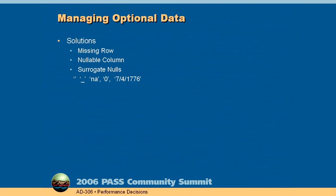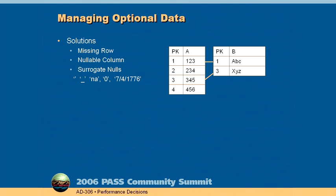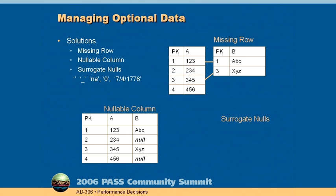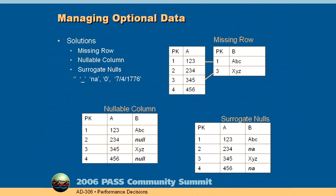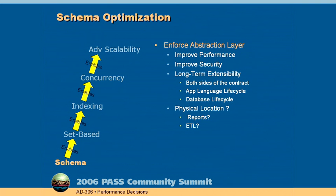Use situational modeling from the relational database design lesson to make your primary keys fast. Be careful about how you design for optional data. My first recommendation is to use a nullable column, but surrogate nulls are acceptable if you can be consistent about them — though that's the trick. Avoid at all costs the missing row pattern. And lastly, enforce a good abstraction layer to protect and encapsulate the schema. This is the only way to have long-term extensibility so the database is flexible and you can make changes without a domino effect breaking tons of code.